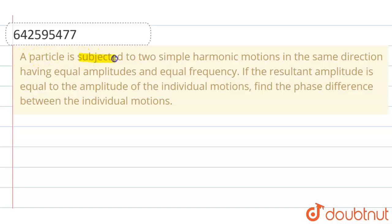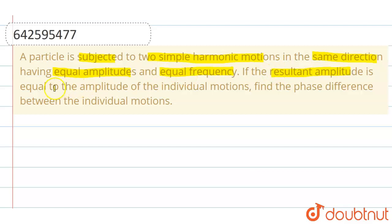A particle is subjected to two simple harmonic motions in the same direction having equal amplitudes and equal frequency. If the resultant amplitude is equal to the amplitude of the individual motions, we have to find the phase difference between the individual motions.